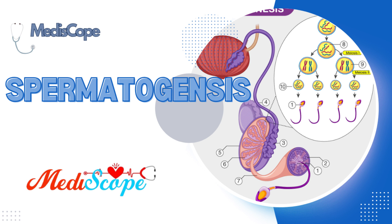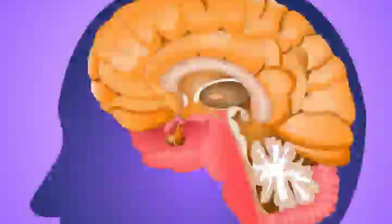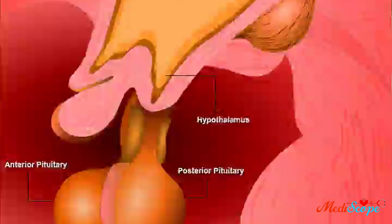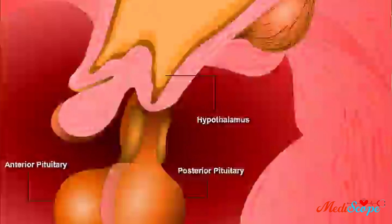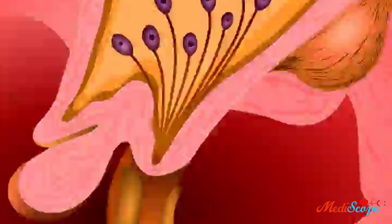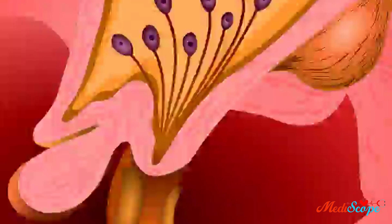Spermatogenesis is the process of germ cell differentiation that leads to the development of spermatozoa. The normal physiology of the hypothalamic pituitary and gonadal axis and how it contributes to the formation of spermatozoa will be reviewed here. Here is a cross-section of the brain. We will now focus on the hypothalamic pituitary axis. The hypothalamus and the pituitary gland are linked by the portal vascular system, which delivers hypothalamic hormones directly to the anterior pituitary and avoids the systemic circulation.